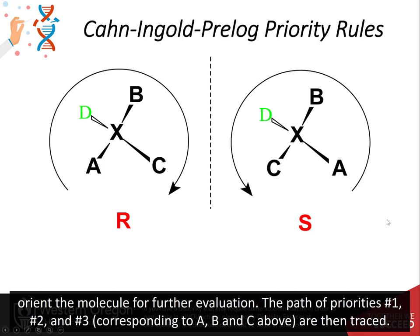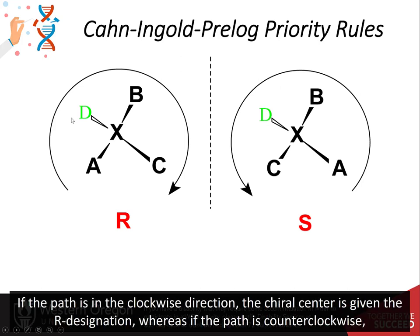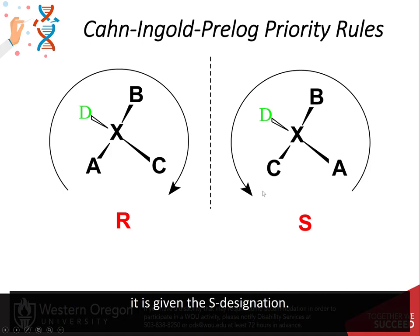The path of priorities number 1, 2, and 3 — corresponding to A, B, and C in the diagram above — are then traced. If the path is clockwise, the chiral center is given the R designation, whereas if the path is counterclockwise, it is given the S designation.